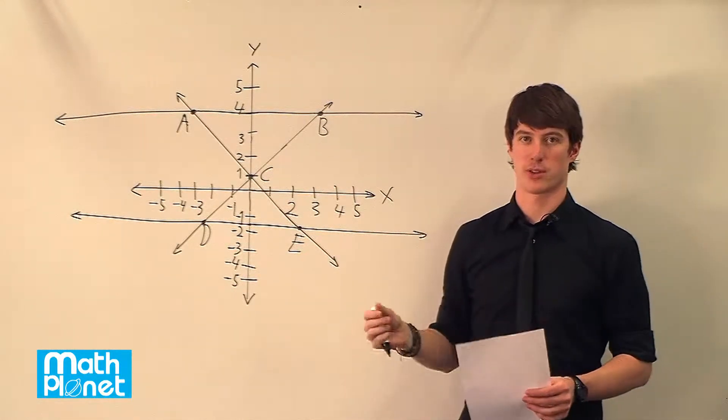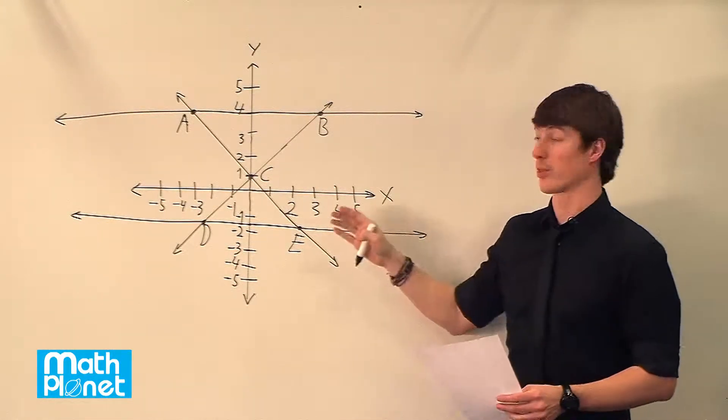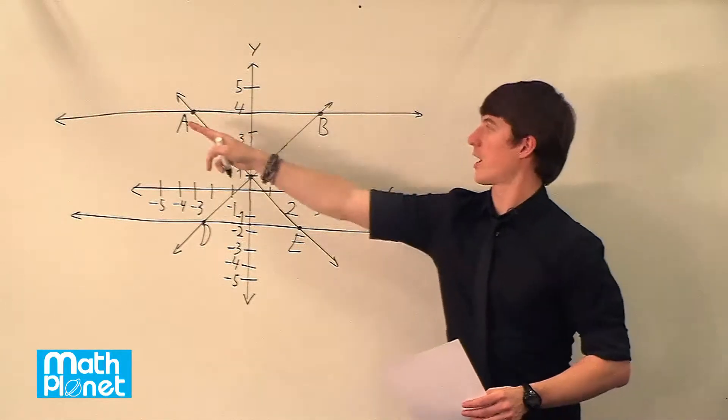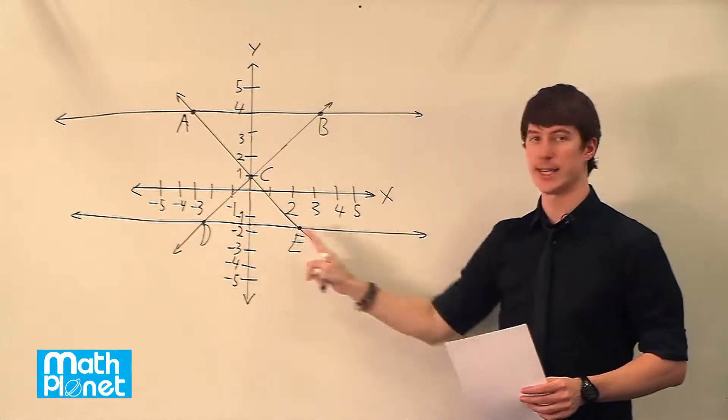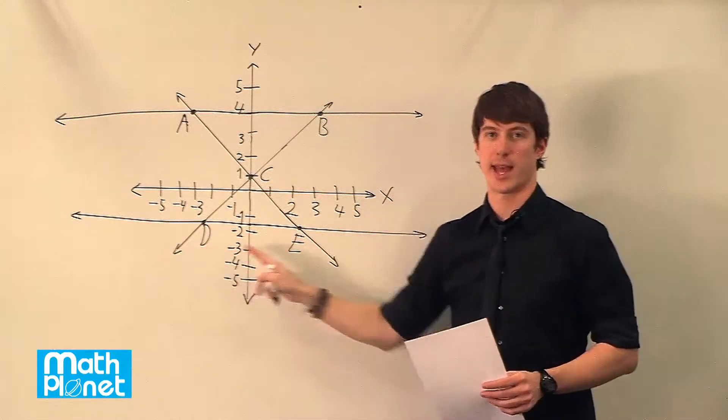So we just want to discuss some basic definitions when we're talking about lines, when we're dealing with lines. So we can call this line here AB because it connects the points A and B, and this one DE because it connects the points D and E.